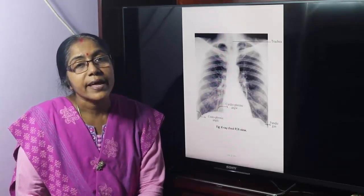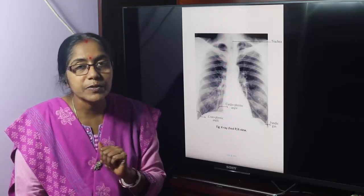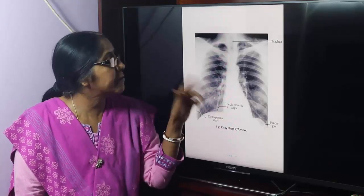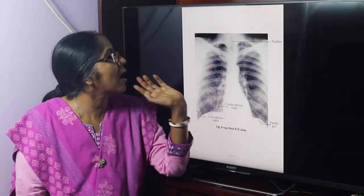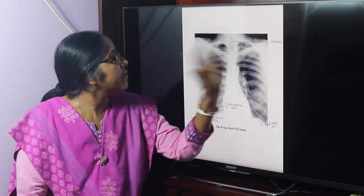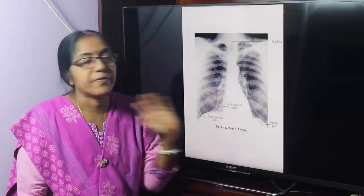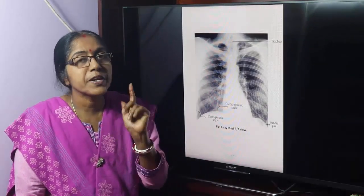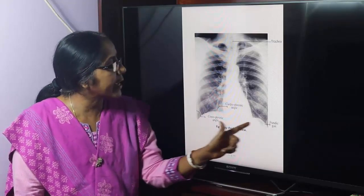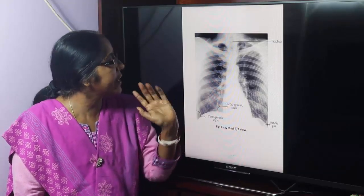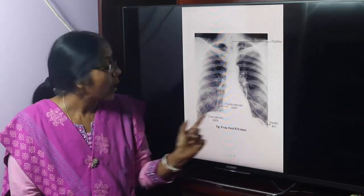This is all about the x-ray chest. The x-ray chest PA view shows the shadows of the heart, lungs, trachea, clavicle, ribs, and the diaphragm. You can see the costophrenic angle and the cardiophrenic angle. This is the fundic gash. This is the right dome of the diaphragm and this is the left dome of the diaphragm.